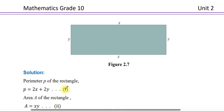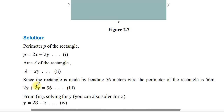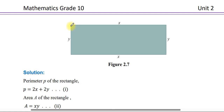The perimeter P of the rectangle is P = 2X + 2Y. This is the formula. The area of the rectangle A is equal to XY.